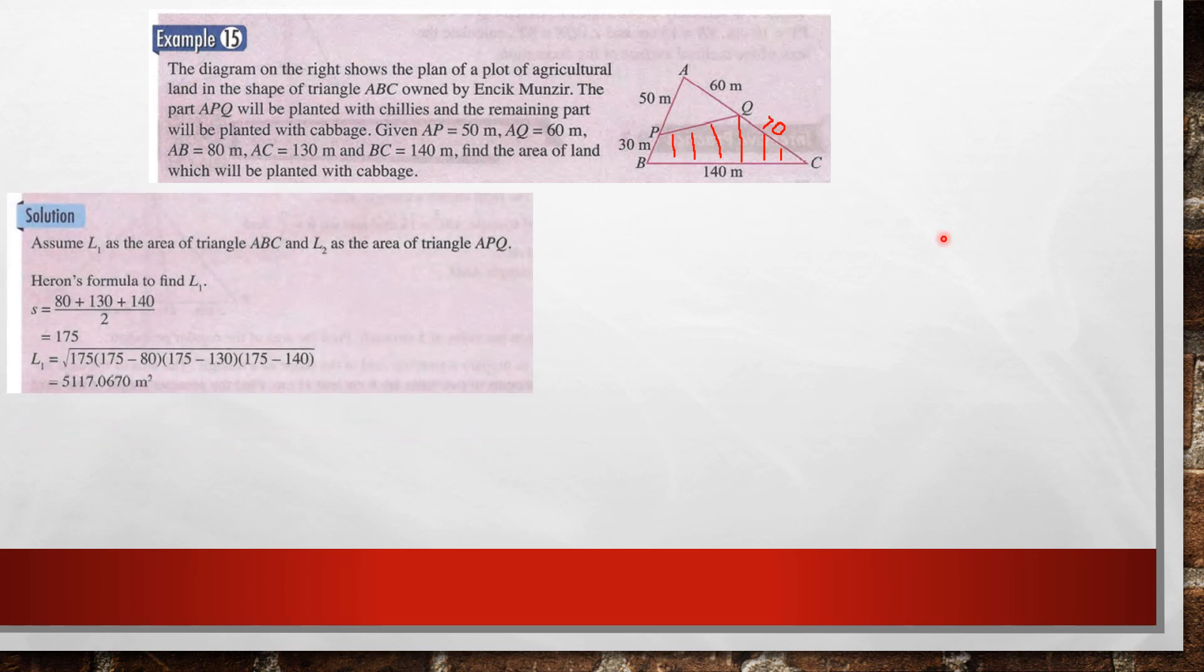So first, what we can do, we find the area of the triangle ABC, the whole triangle. So how we find, we can use Heron's formula. We find semi-perimeter first. AB 80 plus AC is 130 plus BC 140, we divide by 2. So you get semi-perimeter 175.